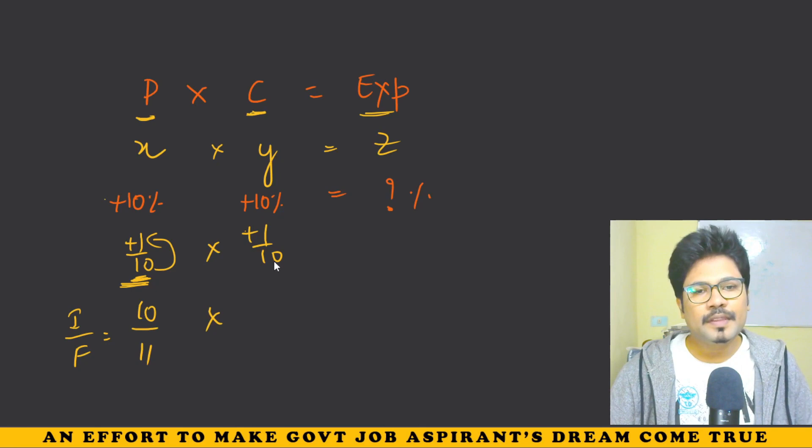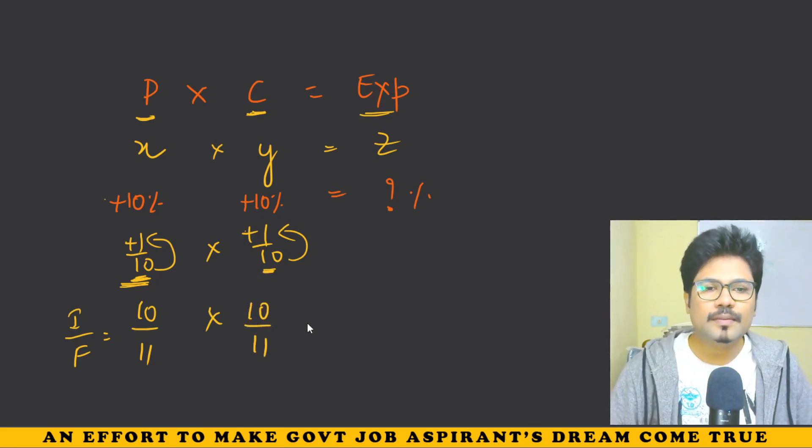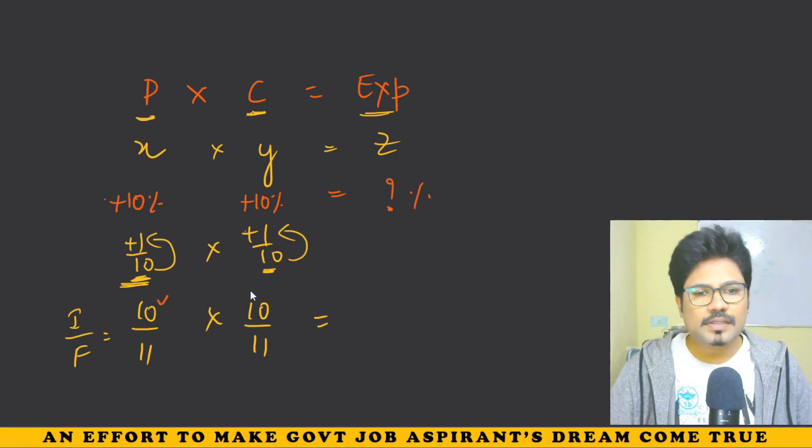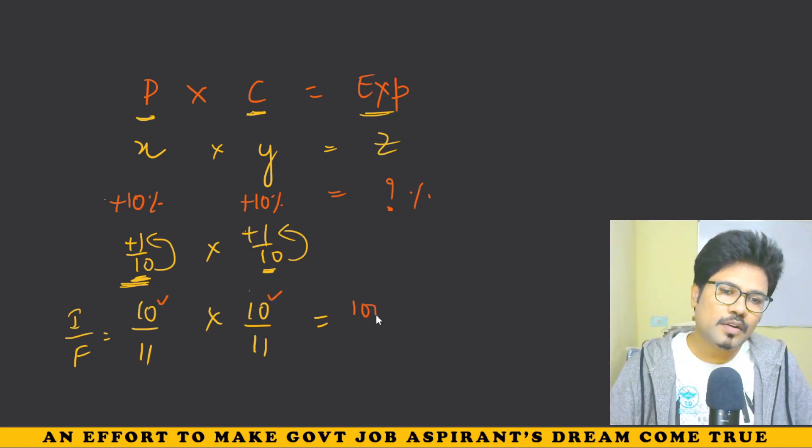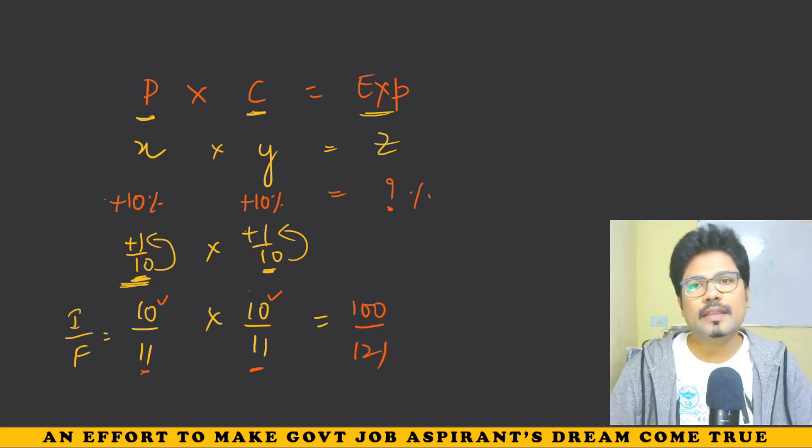Consumption also increased 10%. So earlier I bought 10 items, now 11. If each item's price was 10 rupees, earlier 10 items cost 100 rupees. Next time each became 11 rupees, and I bought 11 items, so it became 121.